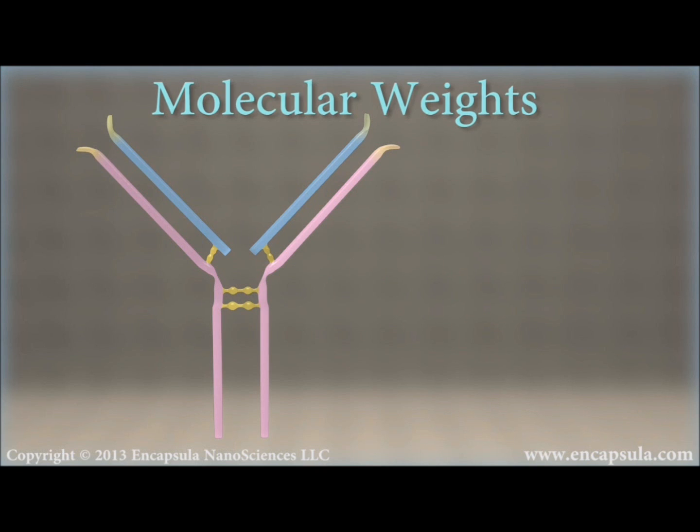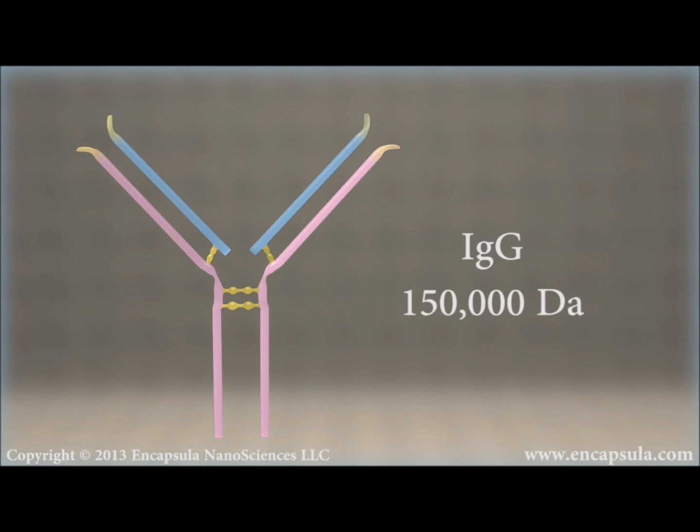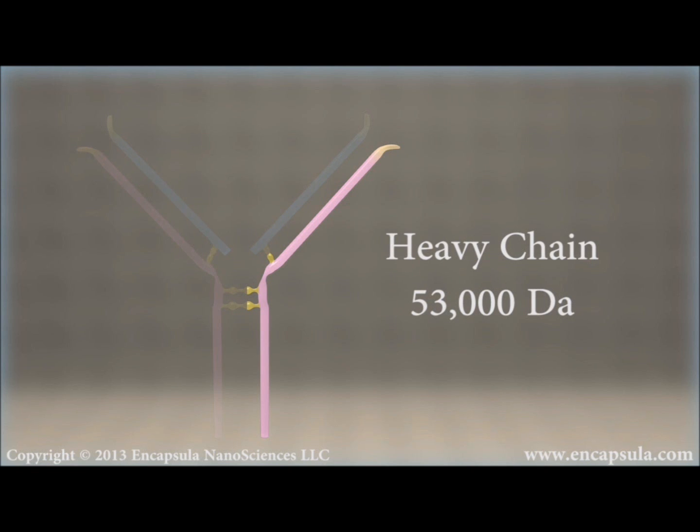Intact immunoglobulin G has a molecular weight of 150,000 Daltons. The heavy chain of immunoglobulin G has a molecular weight of 53,000 Daltons. The light chain of the antibody has a molecular weight of 22,000 Daltons.